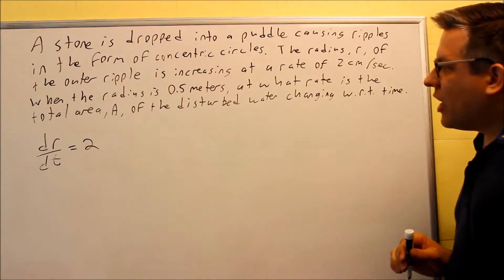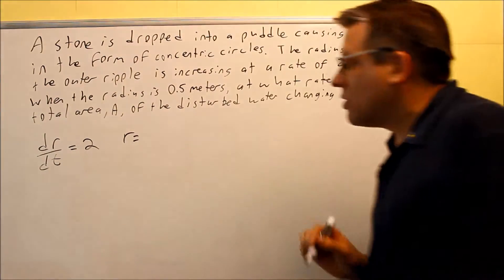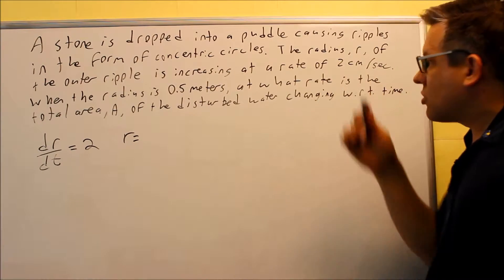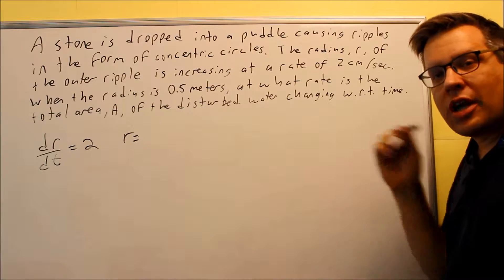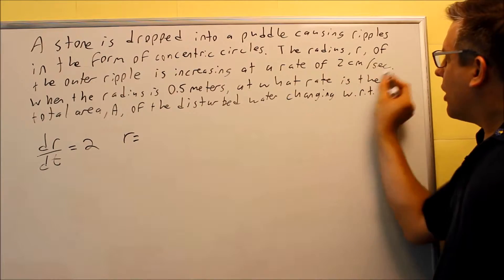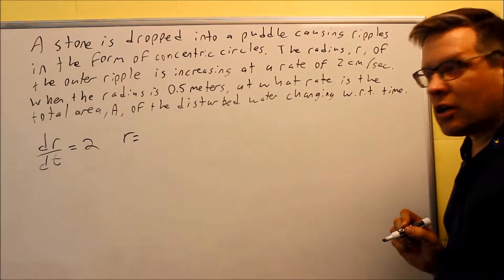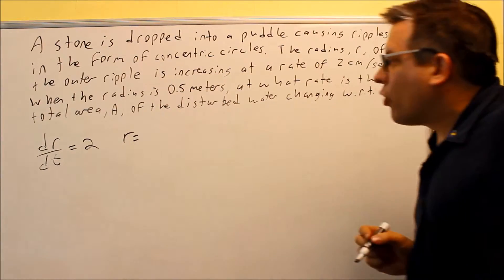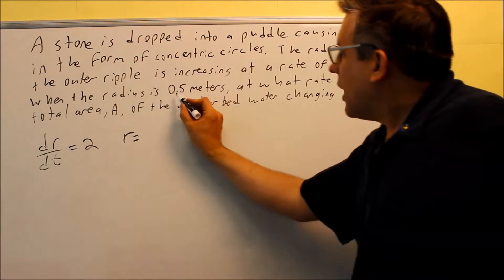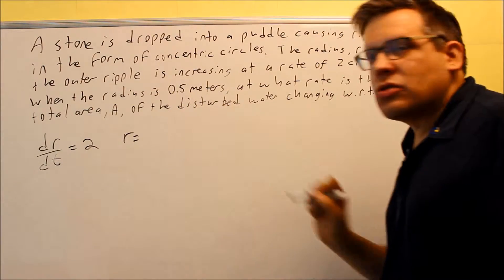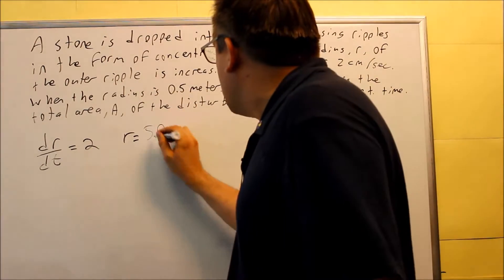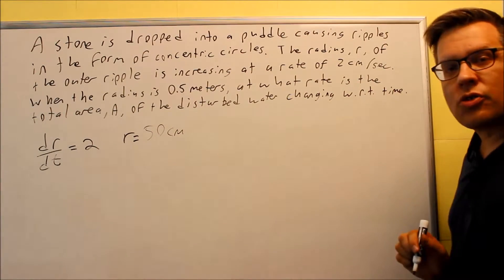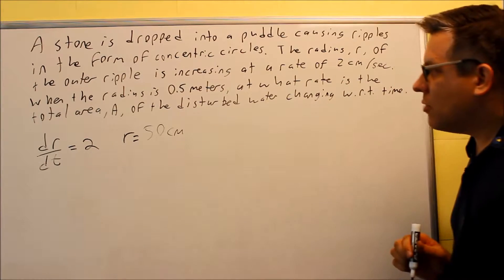When the radius is 0.5 meters — let's slow down. We need to make sure that everything is in terms of the same unit. The rate is in centimeters per second, so I want everything else in centimeters. I need to change 0.5 meters to centimeters by moving the decimal two places to the right. So I want to use 50 centimeters. Make sure everything is in terms of the same units.